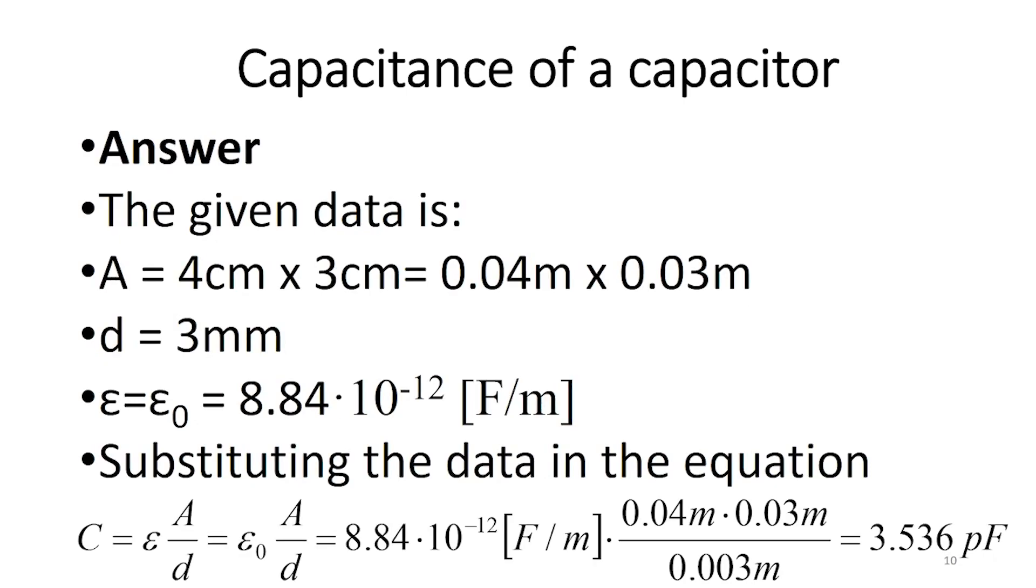The given data is A equals 4 cm by 3 cm, which is 0.04 m times 0.03 m, D equals 3 mm, and epsilon equals epsilon zero, which is 8.84 times 10 to the power of minus 12 Farad per meter.